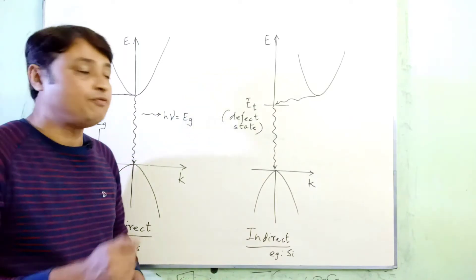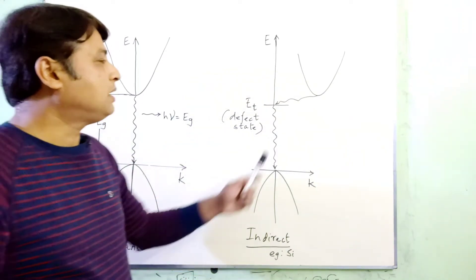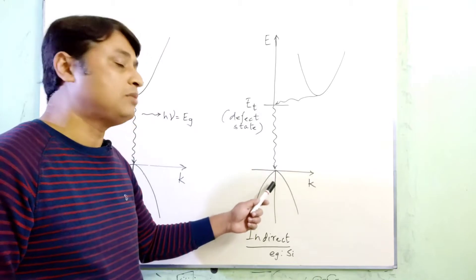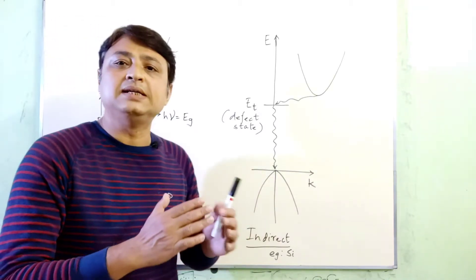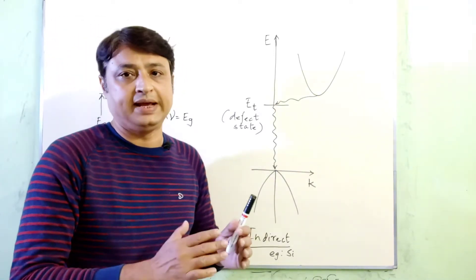On the other hand, for silicon, the minimum of the conduction band and the maximum of the valence band lie at two different values of K.